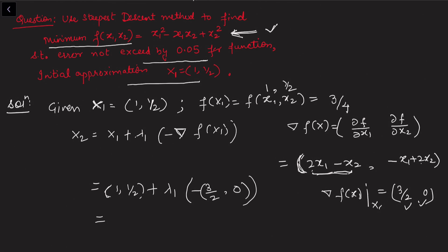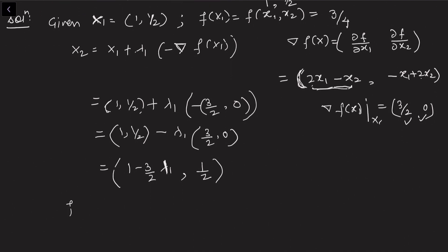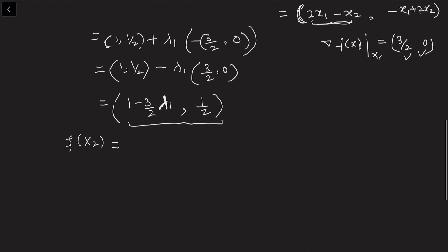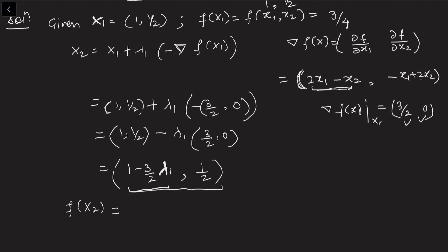Substituting into the formula: x2 = (1, 1/2) − λ1 * (3/2, 0) = (1 − 3λ1/2, 1/2). So x2 depends on λ1. Now substitute x2 into the function: f(x2) = (1 − 3λ1/2)² − (1 − 3λ1/2)(1/2) + (1/2)². This gives f as a function of the single variable λ1.